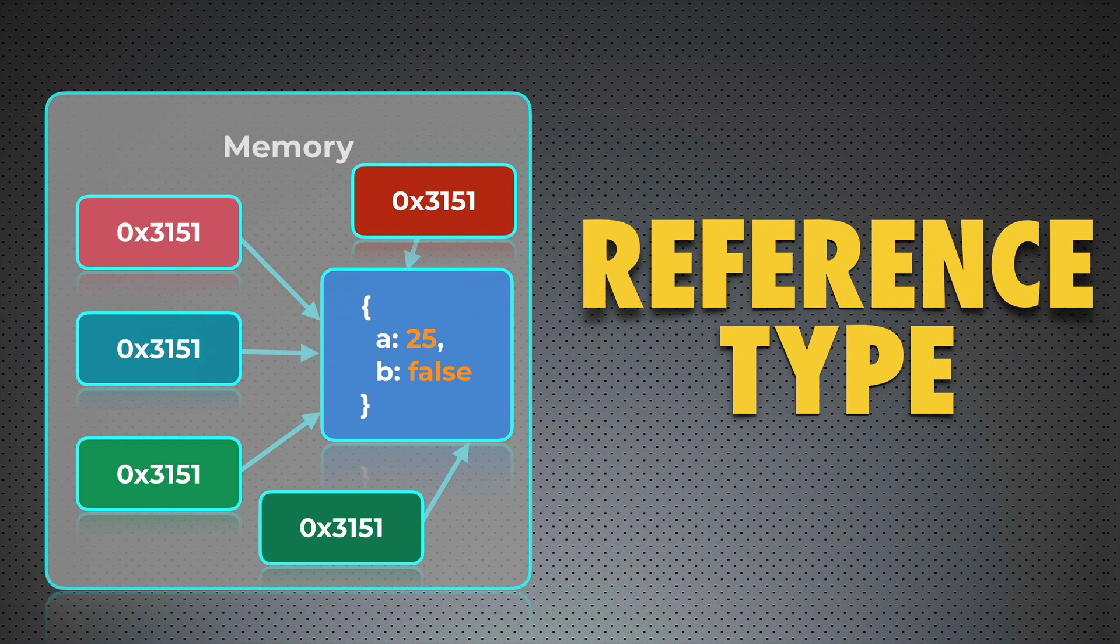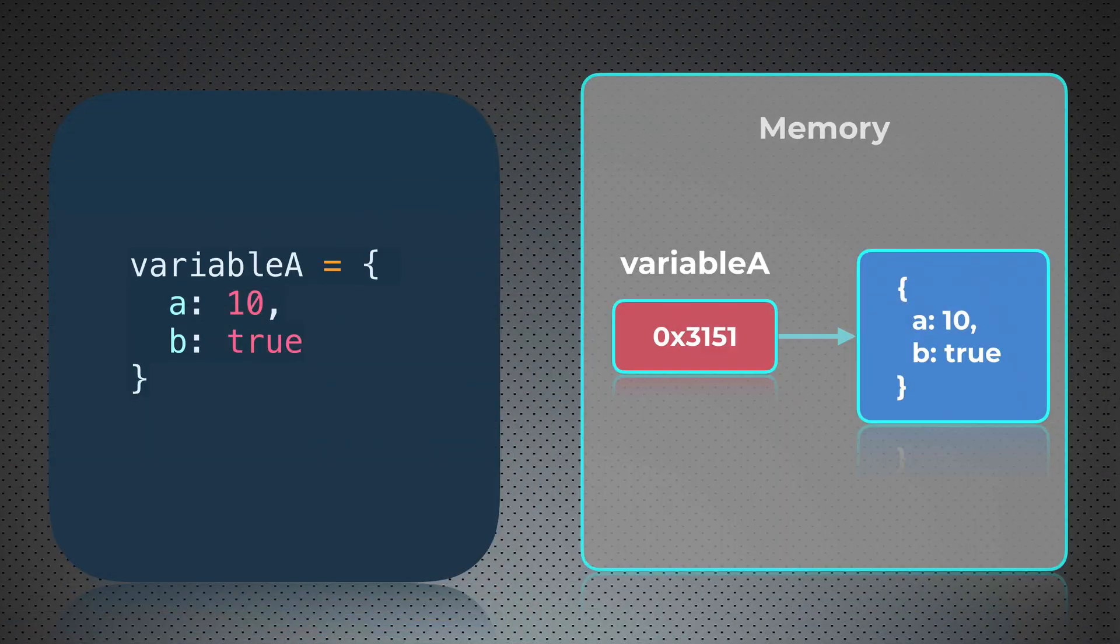And finally, in order to make you fully understand how values of reference type behave, let me show you an example. Please don't focus on the syntax now. We are talking about only the way how values are stored in the memory. Remember that purpose of each variable is to hold a value. And in this example, we assign this value, that is an object with two name-value pairs, to variable A.